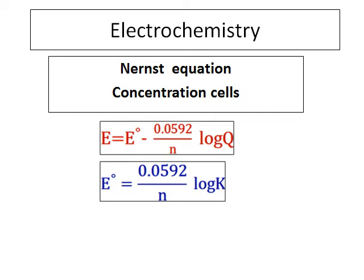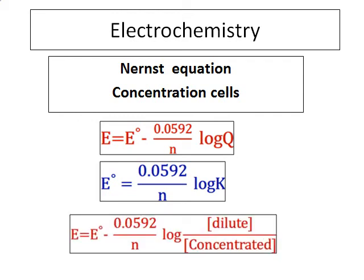At equilibrium, Q equals K and E equals 0, so the equation becomes E0 equals 0.0592 divided by N times log K. For concentration cells, there is a modified form of the Nernst equation. Concentration cells have two half-cells with the same electrodes but different electrolyte concentrations. In that case, E equals E0 minus 0.0592 divided by N times log of (dilute concentration over concentrated concentration).